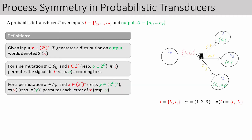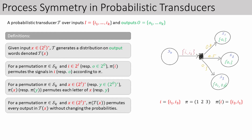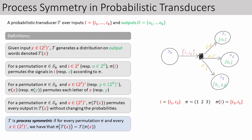We can also permute output letters in the same way, and we lift this to words and to distributions on words. For a word X, the permuted word pi of X is obtained by permuting each letter of X, and for a distribution of output words, we simply permute all the words without changing their probabilities. Now, we say that our probabilistic transducer is symmetric if for every permutation pi and for every input word X, we have that pi of T of X equals T of pi of X. That is, we get the same distribution of outputs if we first run T on X and then permute the words in the output distribution, or if we first permute the input word and then run T on it. The intuition is that in a symmetric transducer, if processes are rewired into different input and output signals, then from their point of view, nothing changes.